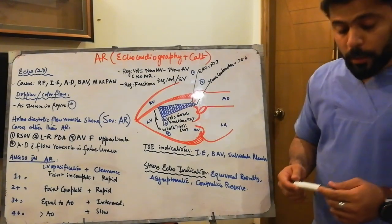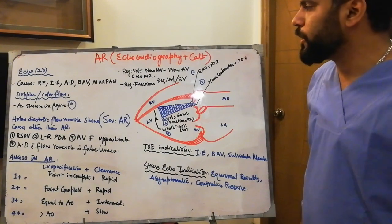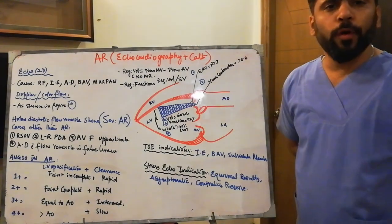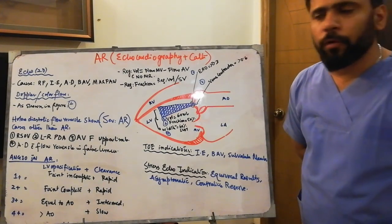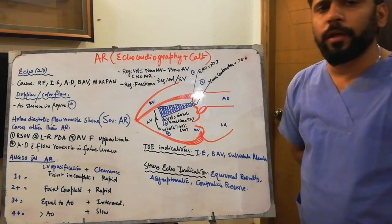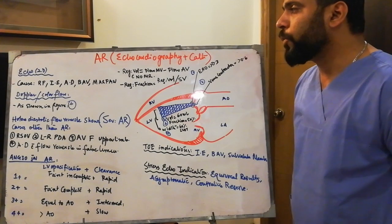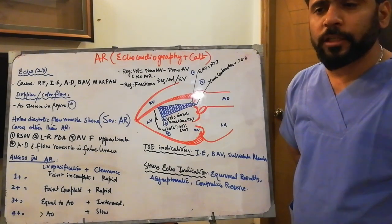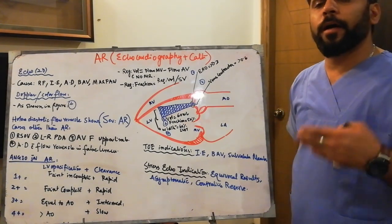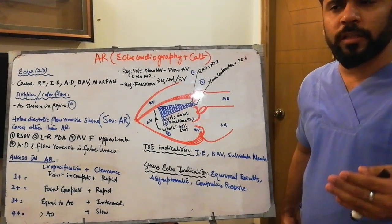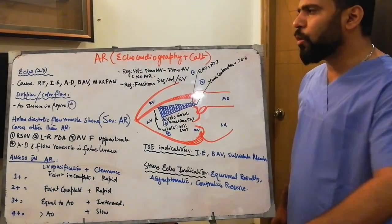Assalamu alaikum, Dr. Nash here again with the remaining topic of aortic regurgitation. Today we will cover the whole echocardiographic findings, the indication of stress echocardiography, transesophageal echocardiography in AR, the indication of cath and what to see in the cath of patients of aortic regurgitation, and briefly discuss advanced technologies such as CMR and CT scan in AR patients.